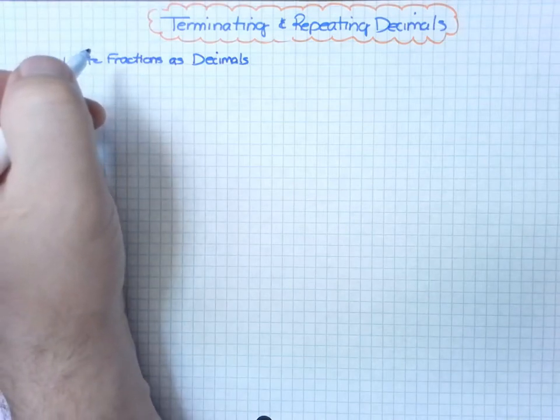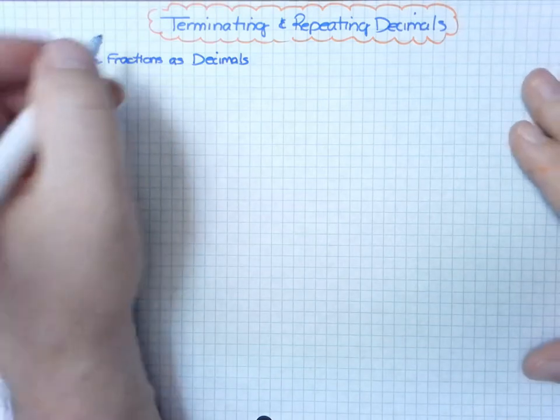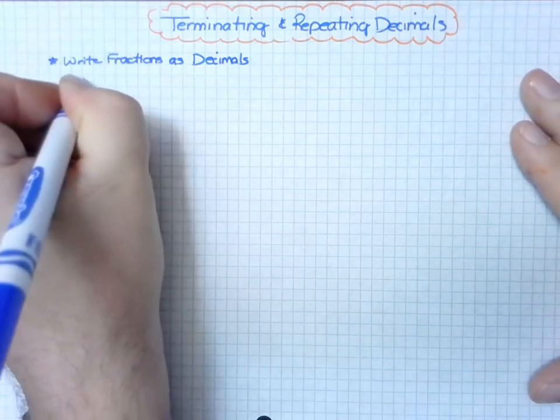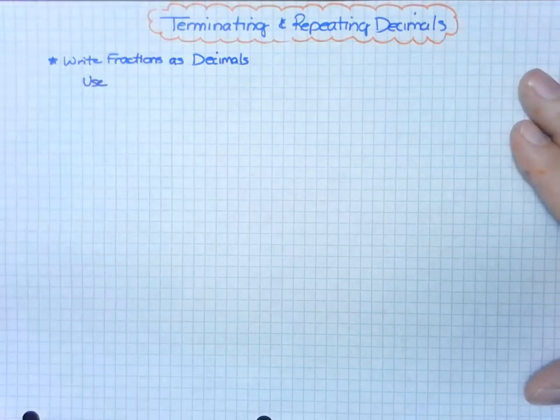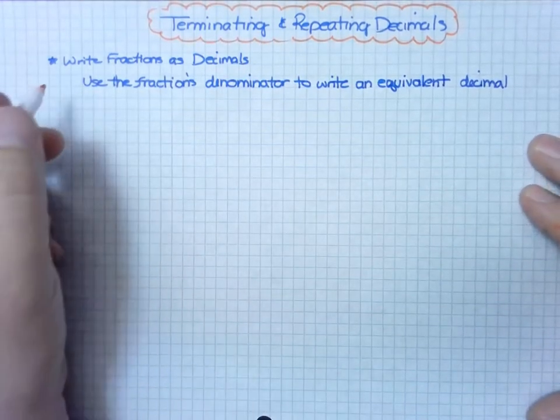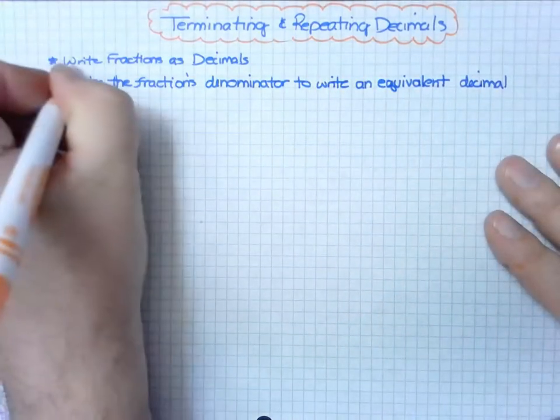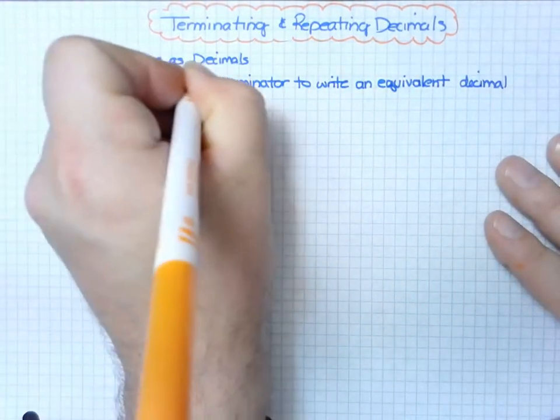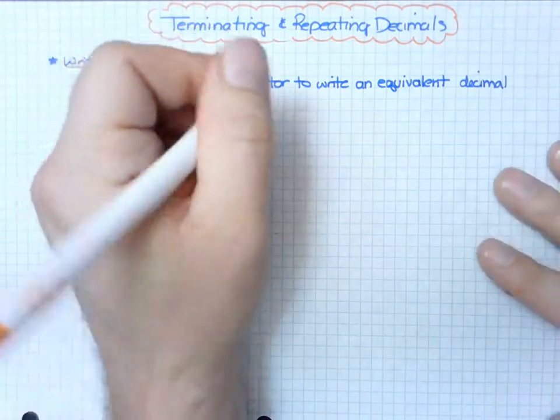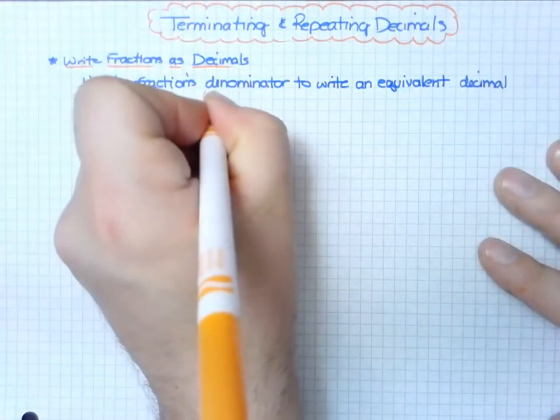What I mean by that is discovering what the power of ten should be. Use the fraction's denominator to write an equivalent decimal by finding a power of ten.